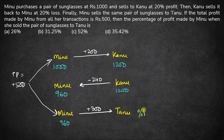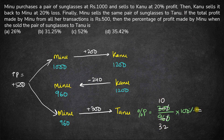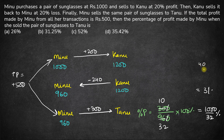The percentage profit is a profit of 300 on a base of 960, multiplied by 100%. The zeros cancel out, giving 1000 upon 32 percent. 1000 divided by 32 is approximately 31.2 percent — since 32 times 31 is 992 and the remainder works out to approximately 0.2. So the answer is 31.2%, and option B is the correct answer.